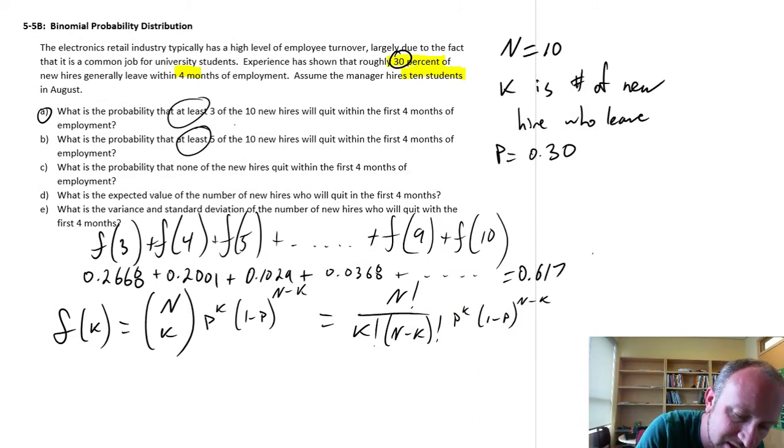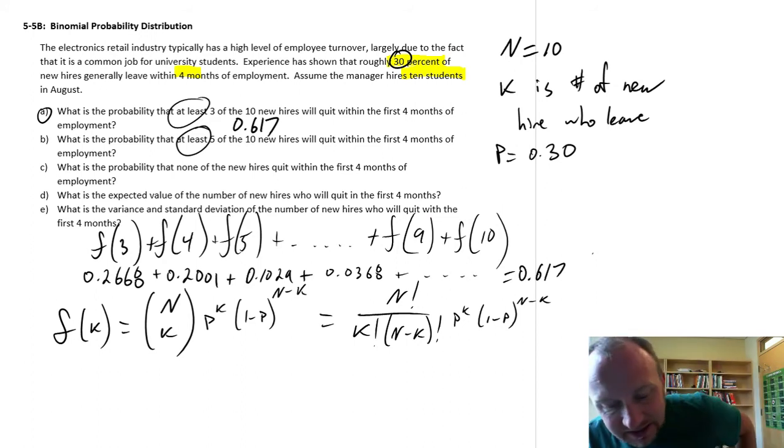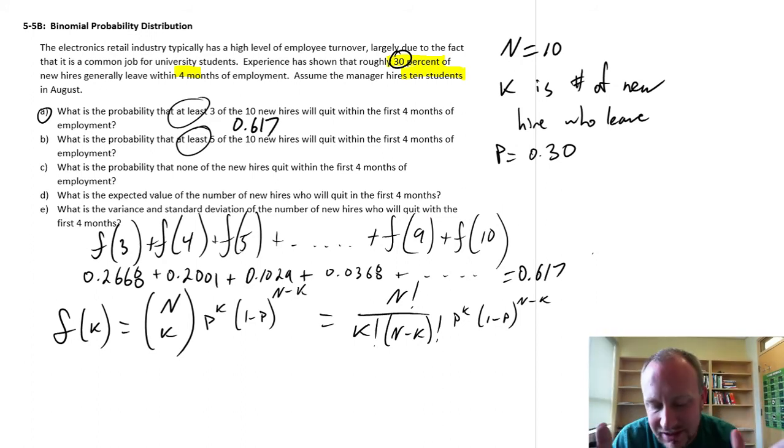.617, so what this means is that there's a 61.7% chance that over the next 4 months, at least 3 of the new hires will quit. Okay, that's pretty high, at least 3 of them are going to quit, 61.7% chance.